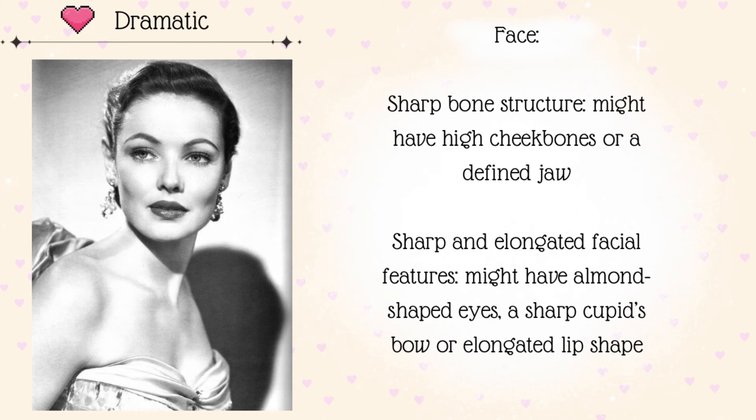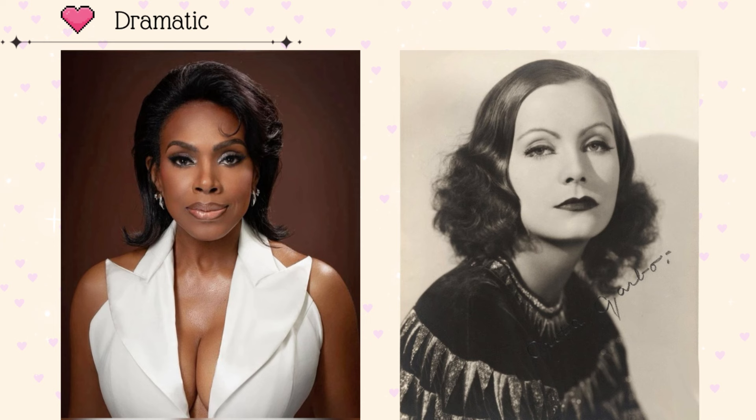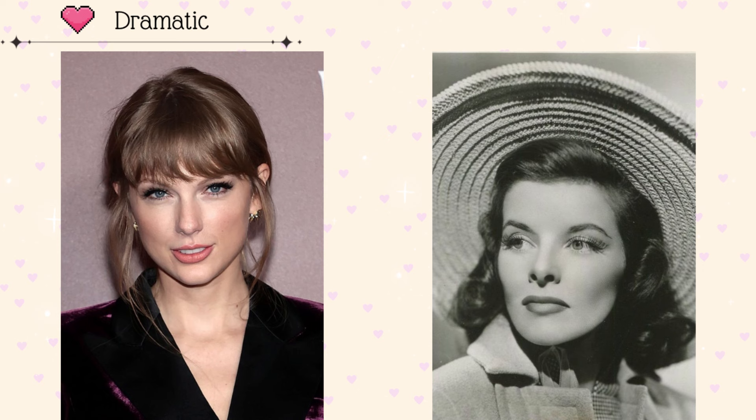The faces of Dramatics follow the same pattern as their bodies. They have sharp facial bones — they might have high cheekbones or a sharp jawline. Their facial features are elongated and sharp; they might have almond-shaped eyes, a sharp cupid's bow, or an elongated mouth and lips. It's important to keep in mind that the face and the body will always have the same yin-yang balance — it's impossible for them not to match. Here we have some examples of Dramatic faces: Cheryl Lee Ralph and Greta Garbo, both with sharp and upturned features. A lot of Dramatics tend to have a feline look. Next are Taylor Swift and Katharine Hepburn — Taylor has a textbook Dramatic face, very sharp.